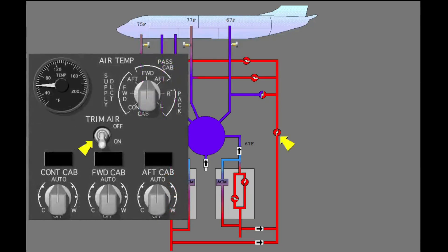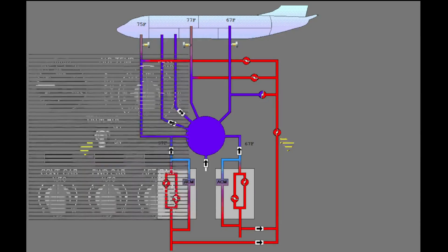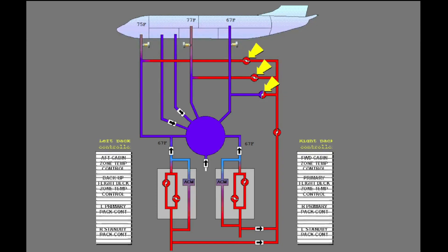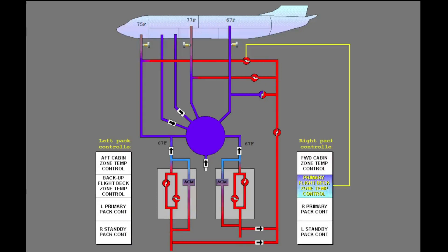The trim air switch controls the trim air regulator and shutoff valve. The trim air pressure regulator and shutoff valve controls the air that goes to the trim air system. There are three trim air modulating valves. The two pack controllers use the valves to control the temperature in the zones. The right pack controller is the primary controller for the flight deck trim air valve.